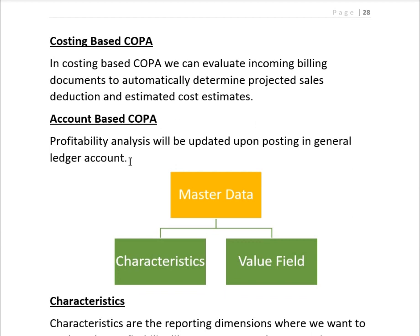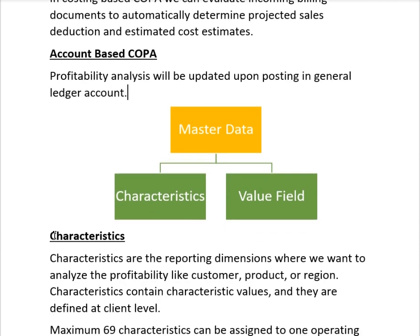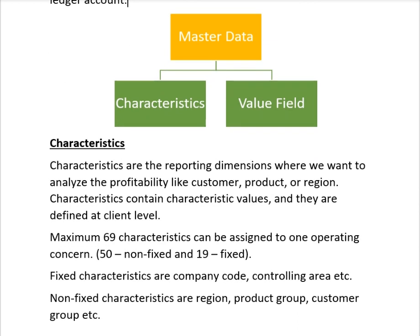In SAP S/4HANA, SAP recommends using account-based COPA only, and all characteristics of costing-based COPA are now available in account-based COPA. Characteristics are the reporting dimensions where we want to analyze profitability — for example, customer, product, or region. Usman is a characteristic value under the characteristic 'customer.' We assign characteristics to our operating concern and then determine profitability for each characteristic value.